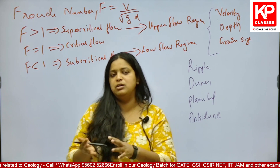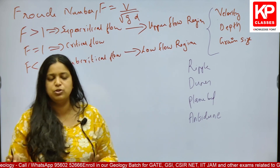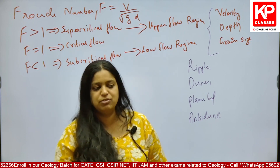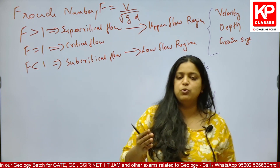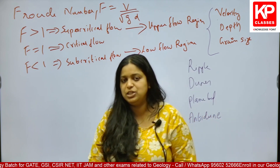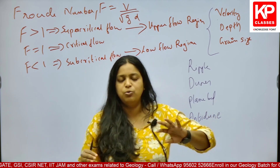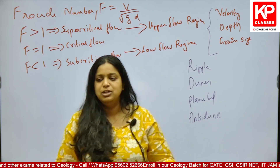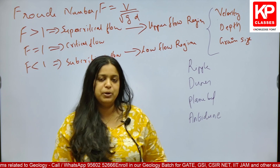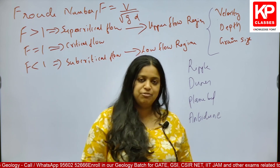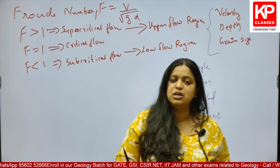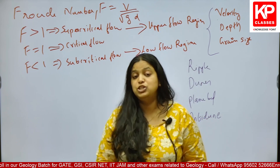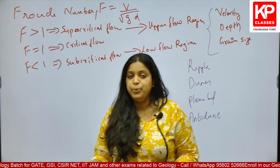Froude number is simply an equation: F equals mean flow velocity divided by the square root of g times d. This Froude number actually gives us an idea about the velocity and the depth of the channel and their relationship — how much is the velocity, whether the velocity is higher, whether it is a shallow water condition. It is also defined as the ratio of inertial forces to gravitational forces.